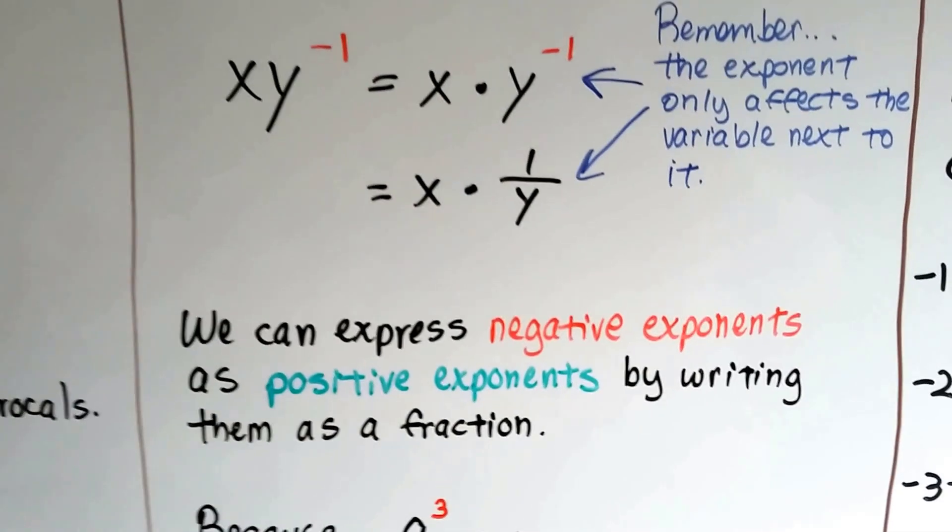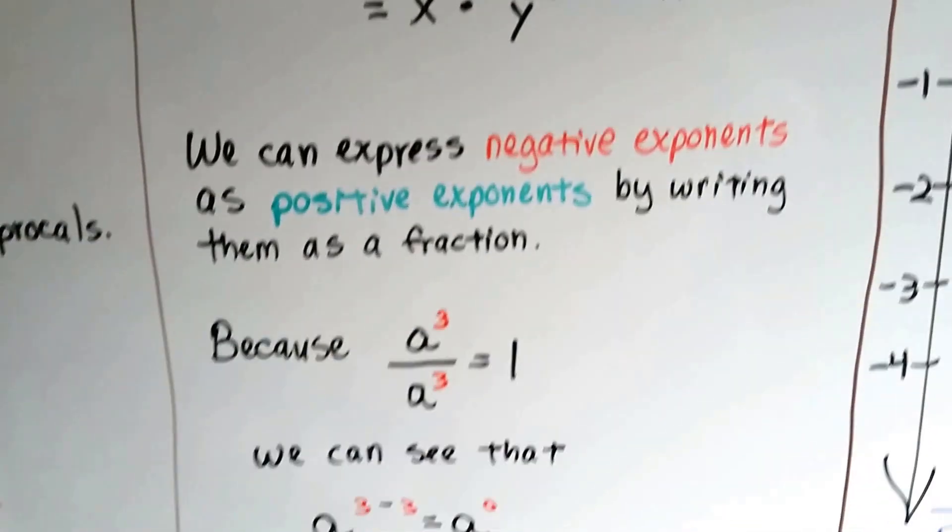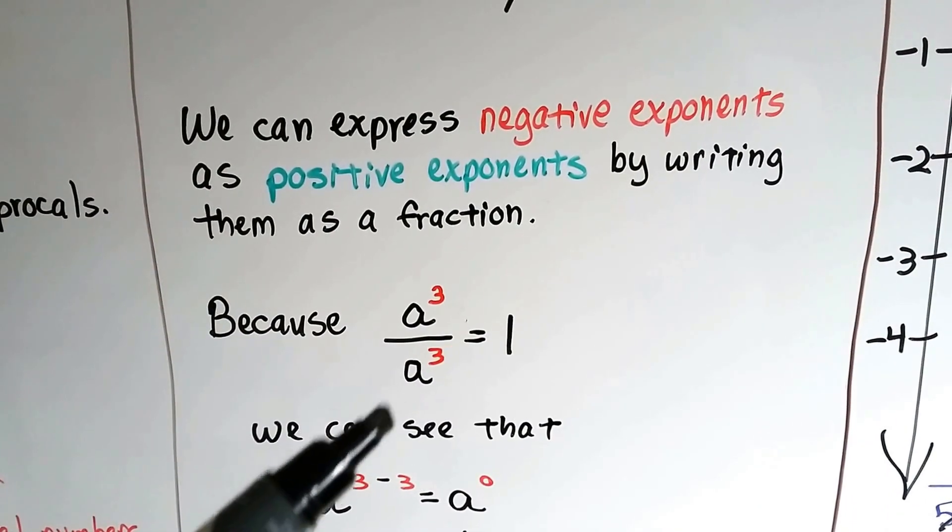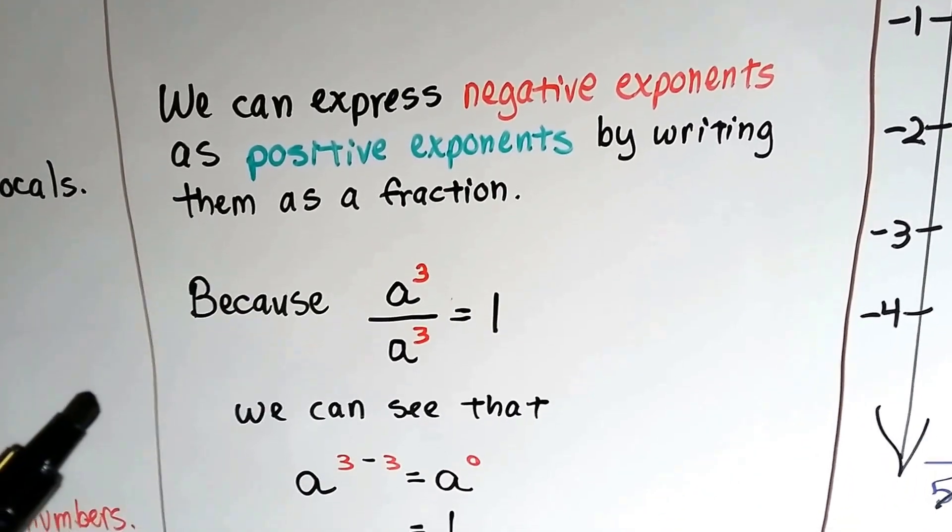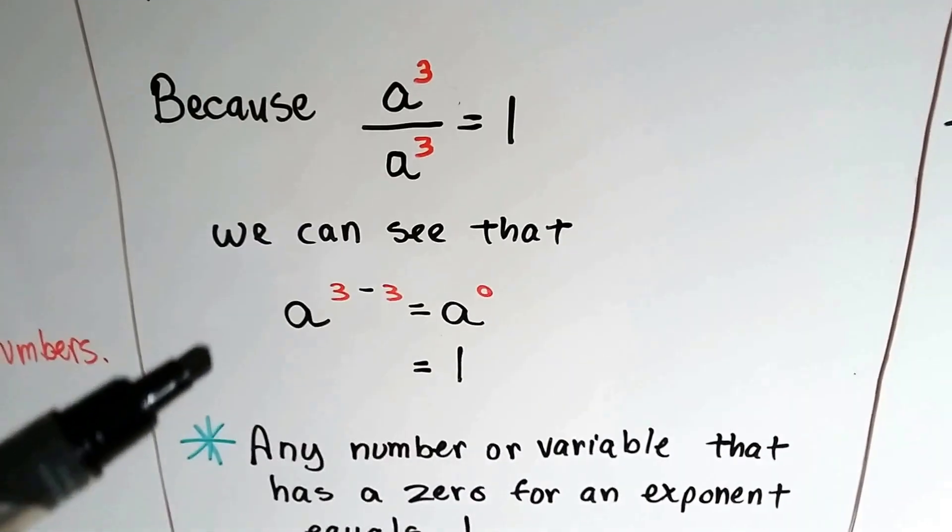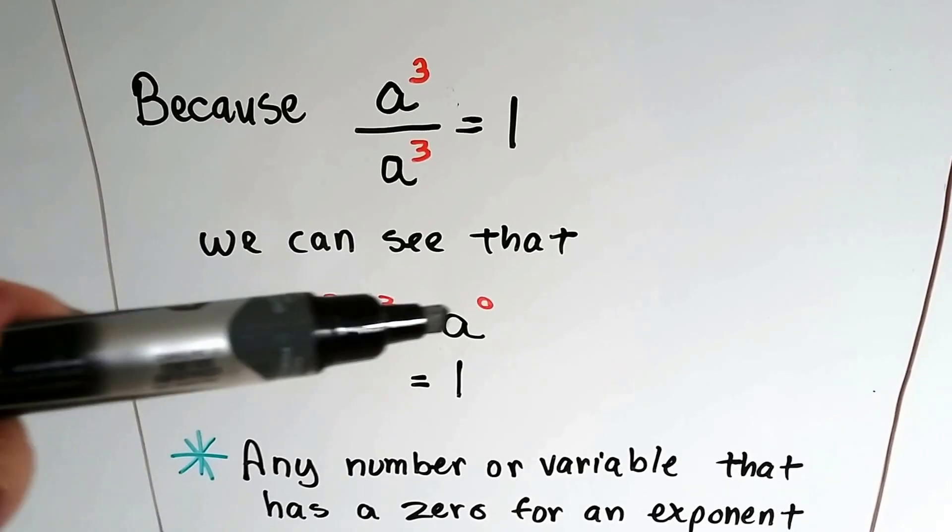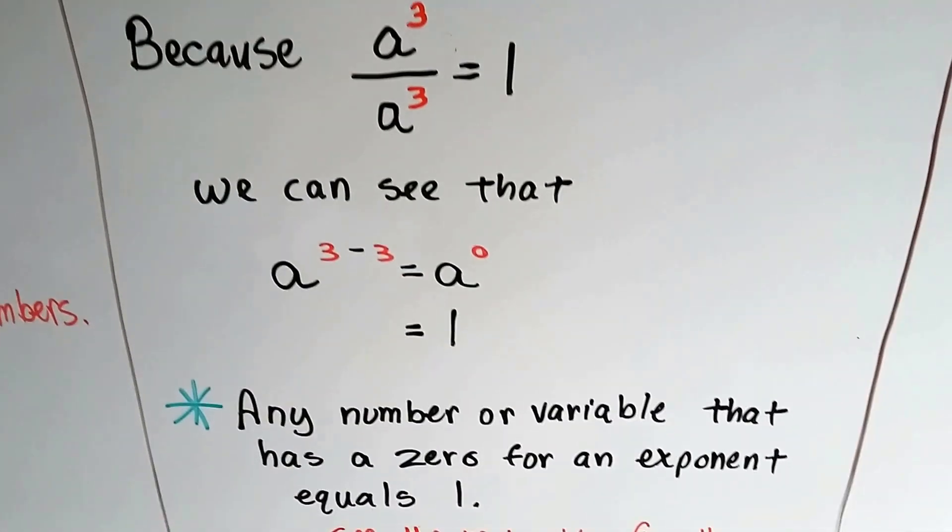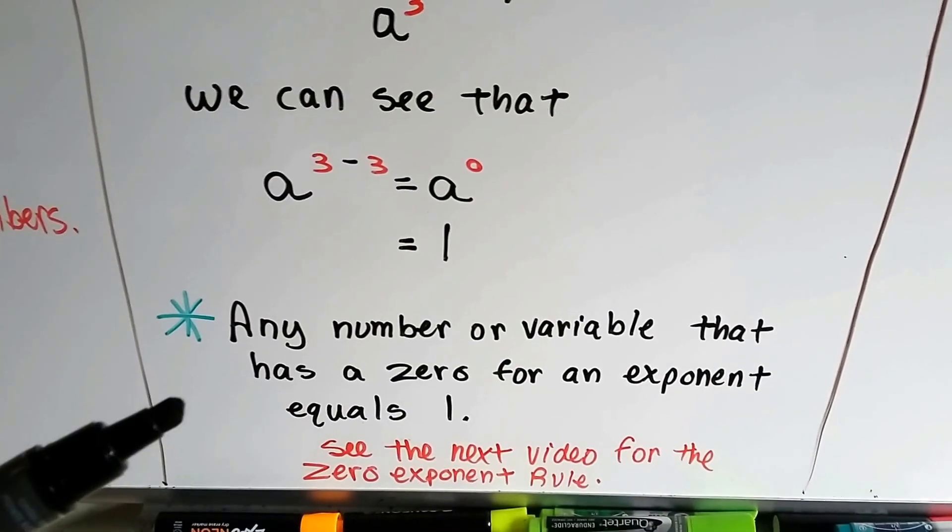So we can also express negative exponents as positive exponents by writing them as a fraction. Now, because a to the third power over a to the third power has the same numerator and denominator, so it equals a 1, that means that we can see that a to the 3 minus 3, which would be a to the 0 power, is going to equal 1. So any number or variable that has a 0 for an exponent equals 1.